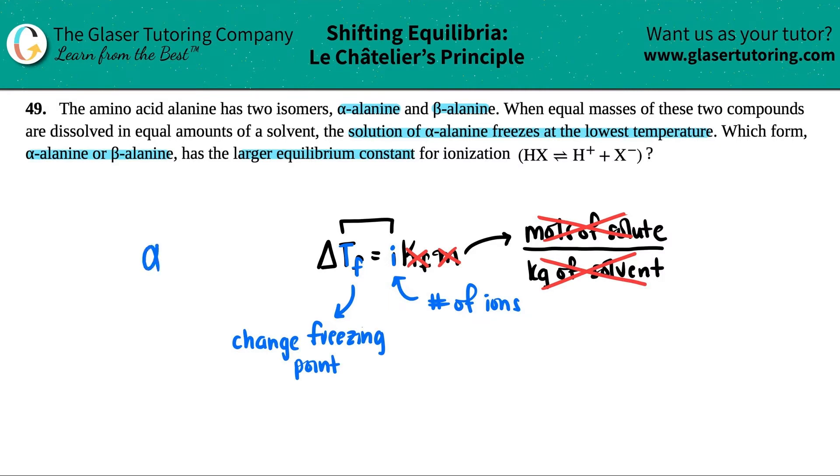If alpha alanine had the lowest freezing temperature, that means that the change in the normal and actual freezing temperature had to increase. If the change increases, that means alpha alanine had a greater number of ions. In terms of alpha alanine and beta alanine, alpha alanine has the higher number of ions present.